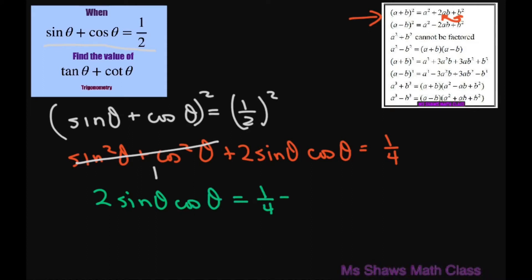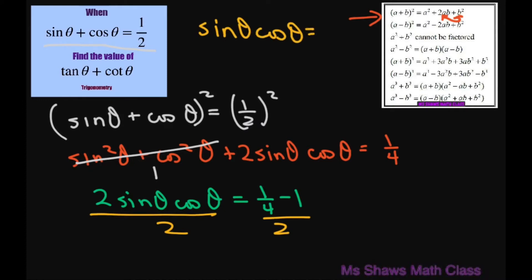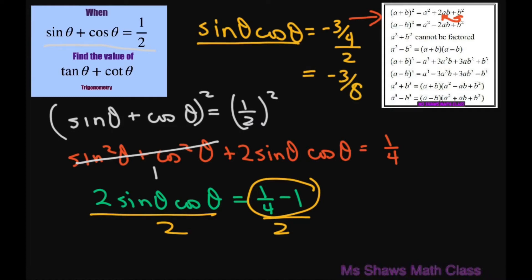Since sine squared of theta plus cosine squared of theta equals 1, we now have 2 sine of theta cosine of theta equals 1/4 minus 1. Dividing both sides by 2, sine of theta times cosine of theta equals negative 3/8.